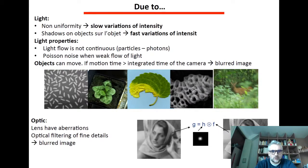There can be also shadows of an object like fast variations of intensity. It can come also from light properties.